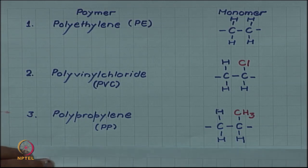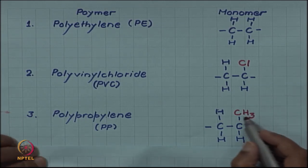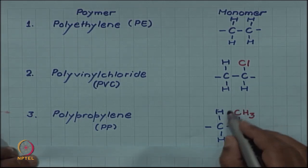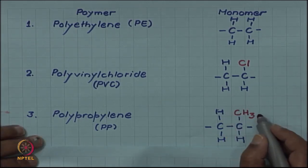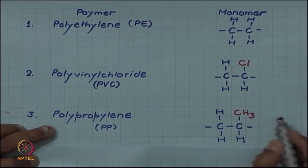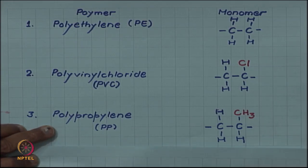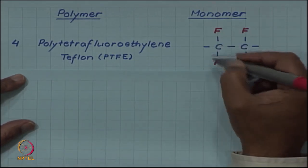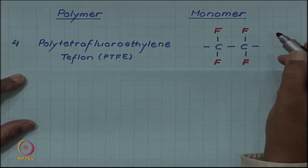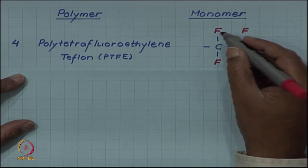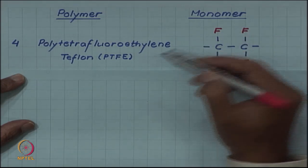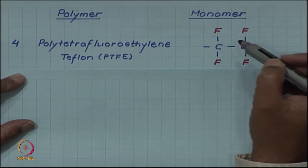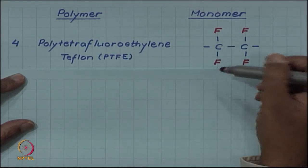We can have one of the hydrogen atoms substituted by the CH3 group, in which case we have a polymer known as polypropylene. If all the hydrogen atoms are replaced by fluorine, we have polytetrafluoroethylene, or Teflon.